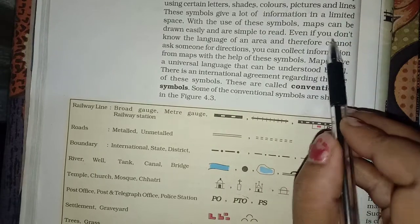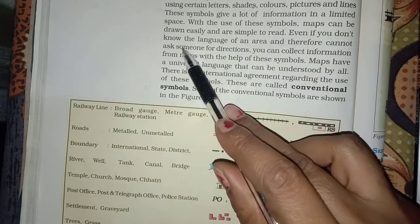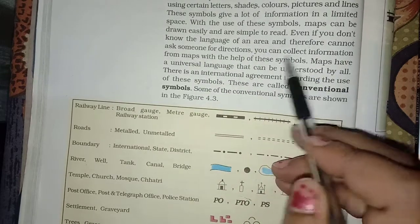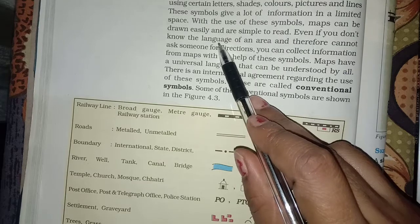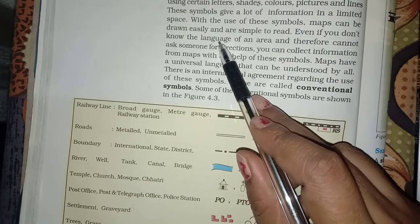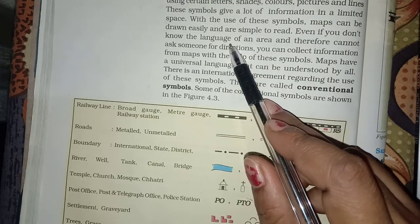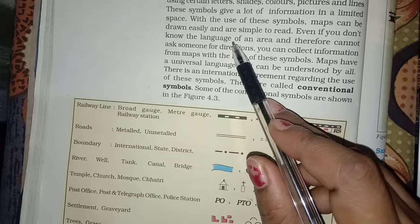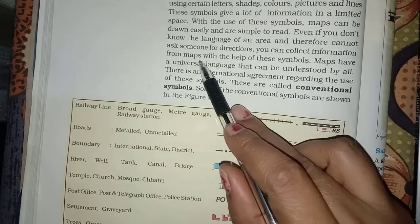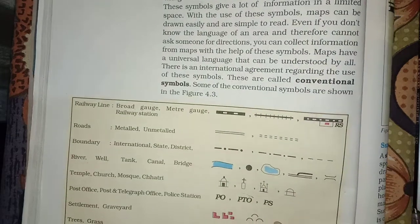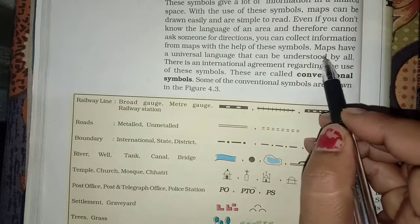Even if you don't know the language of an area and therefore cannot ask someone for directions, you can collect information from map with the help of these symbols. If we go to some place, we don't know the language, we can use the symbols to make a map and know where things will be.